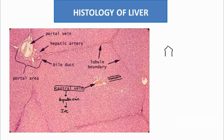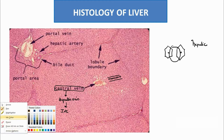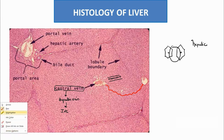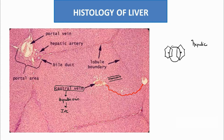Even a single hepatic cell is hexagonal in shape, and the surrounding cells are separated by a space known as the sinusoidal space — the hepatic sinusoid. These sinusoids radiate to the periphery and are open spaces containing arterioles and venules.